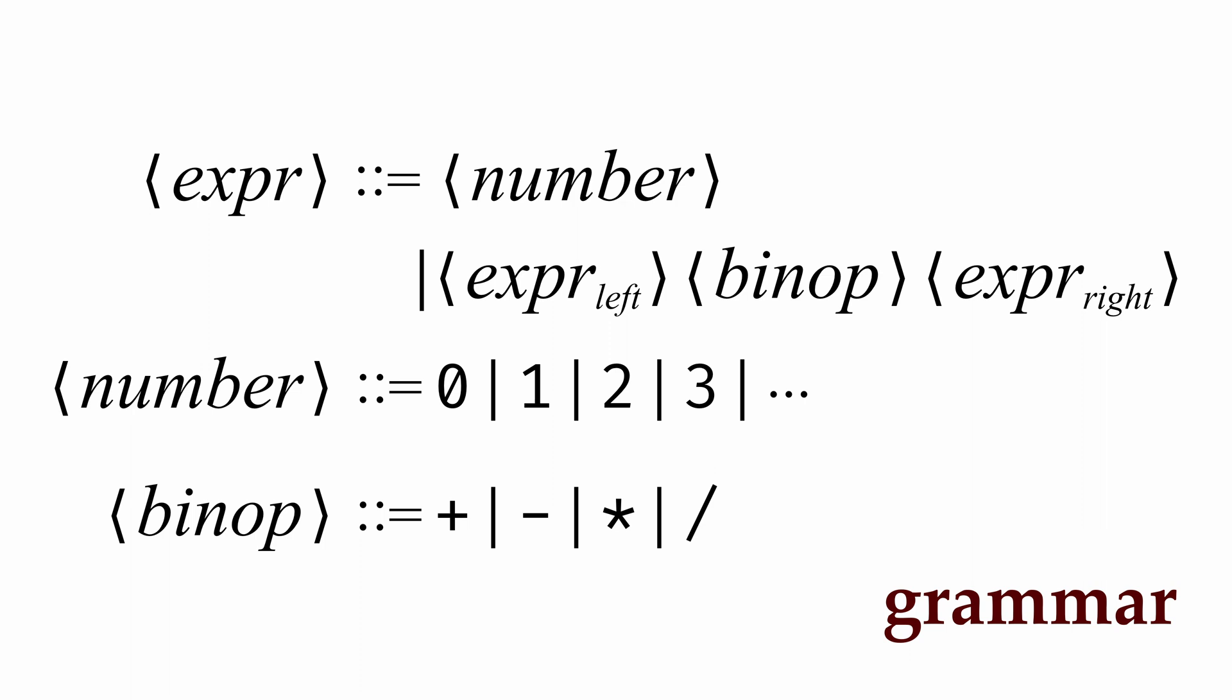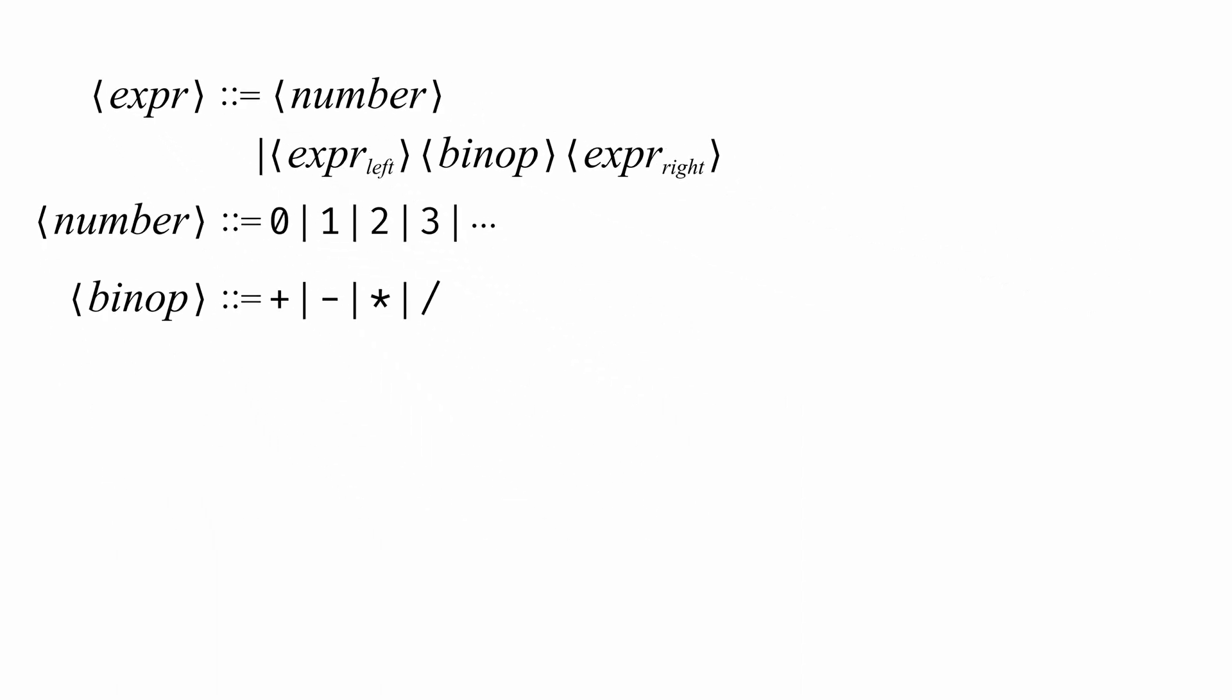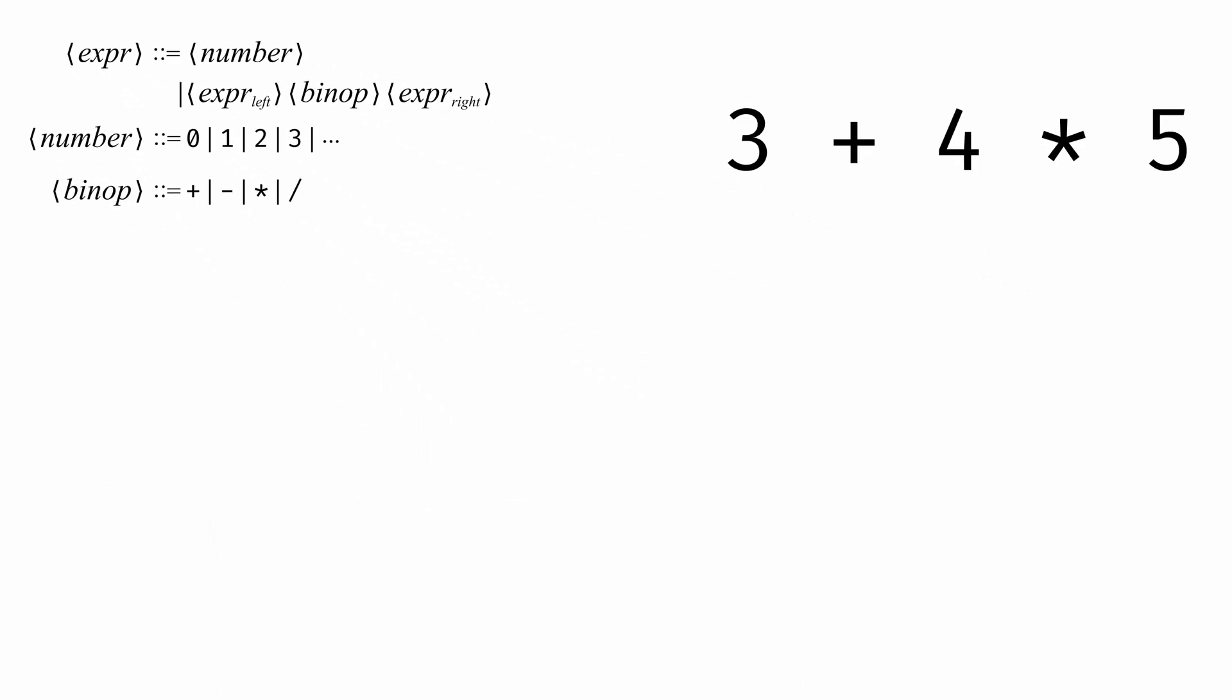Using the rules in this grammar, we can build an infinite number of different arithmetic expressions. For example, let's take the expression 3 plus 4 times 5. It's an expression formed by a left expression, a binary operator, and a right expression.